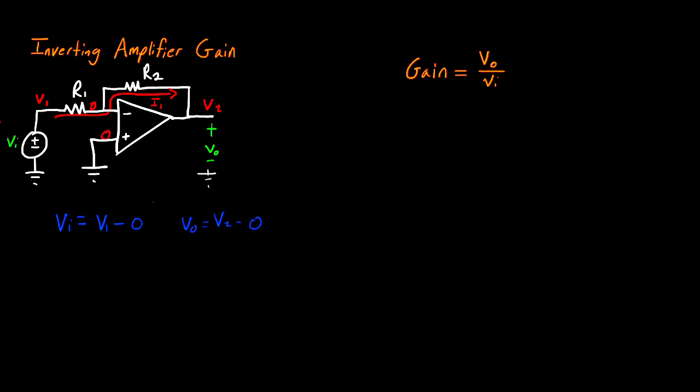Now for our first resistor R1, using Ohm's law, I1 equals V1 minus zero divided by R1. For R2, I1 equals zero minus V2 divided by R2.